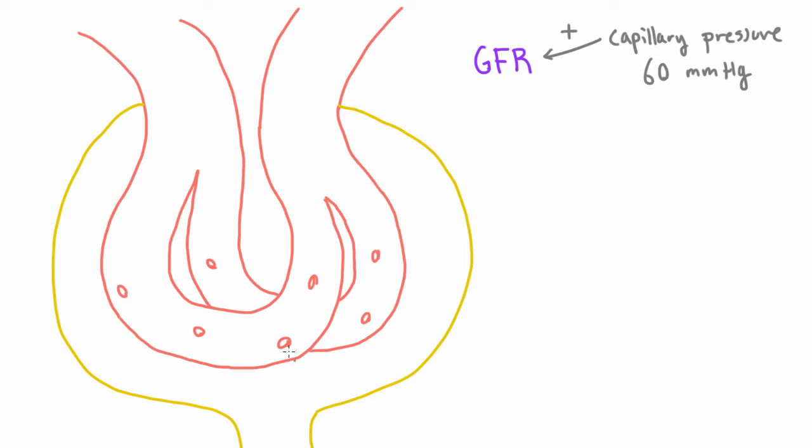But at the same time, since pressure in the capillaries would push more fluid out, then pressure in Bowman's space, pressure out here, would make it harder for fluid to come out of these holes. So capillary pressure increases GFR, but Bowman's space pressure would decrease GFR.